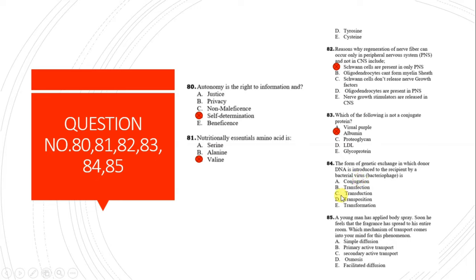Question 84: The form of genetic exchange in which donor DNA is introduced into a recipient by a bacterial virus or bacteriophage is called transduction. This form of genetic exchange is proved by a vector which is a bacteriophage.